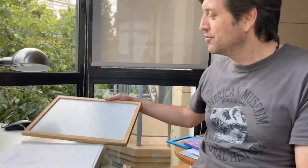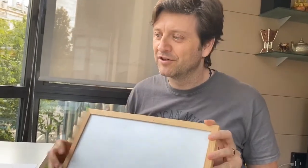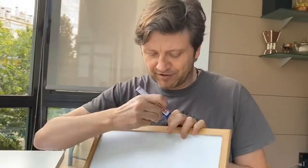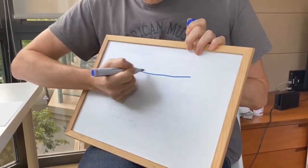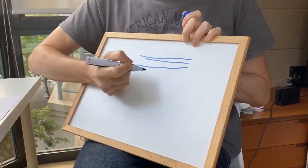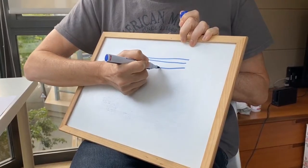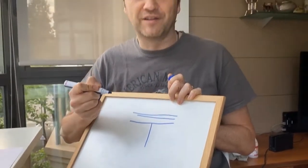Good afternoon. Today we're going to make our first geological cross-section, a very simple one. As you know, any plane in space can be defined by two main lines: the horizontal line — in any plane we have infinite horizontal lines — and the line of maximum inclination.